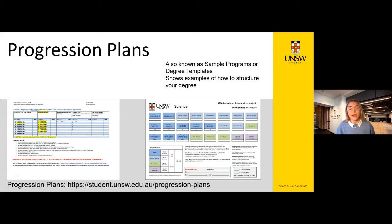Progression plans, also known as sample programs or degree templates, show examples of how to structure your program. They help with knowing what to enrol in and when, based on your programme, major, and when courses are offered. For example, for the Bachelor of Science with a major in mathematics, the programme consists of 144 units of credit: 60 units of core courses in dark blue, 48 units of science electives, 24 units of free electives, and 12 units of general education. These are really useful for planning the entirety of your program, and I recommend saving your progression plan and ticking off courses as you complete them so you know exactly what you've completed and what remains.